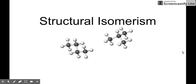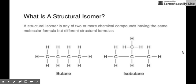What we will tackle in this video is structural isomerism. A structural isomer is any of two or more chemical compounds or molecules that have the same chemical or molecular formula but they differ in how they are arranged or they differ in their structural formulas.